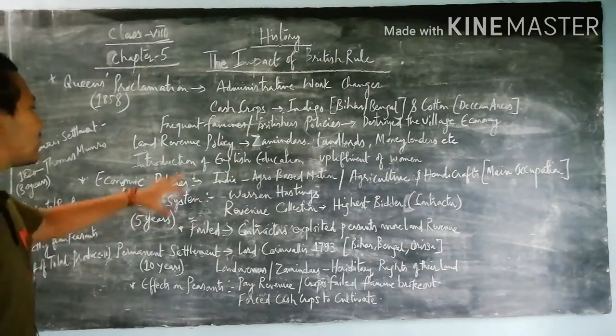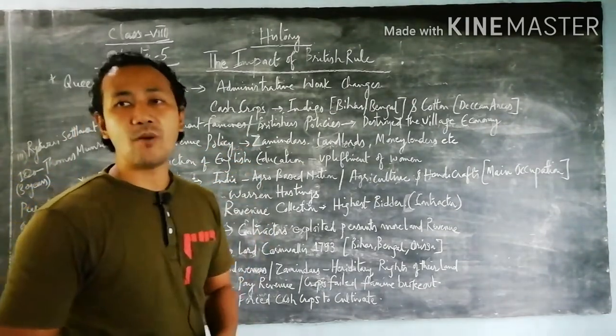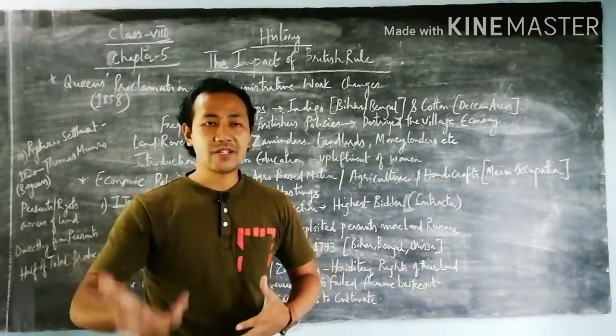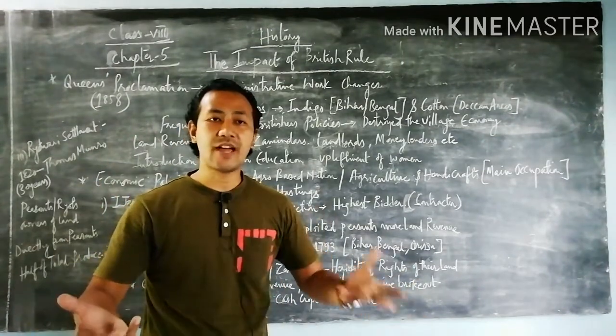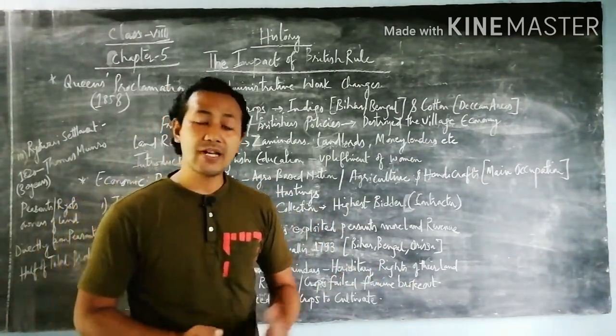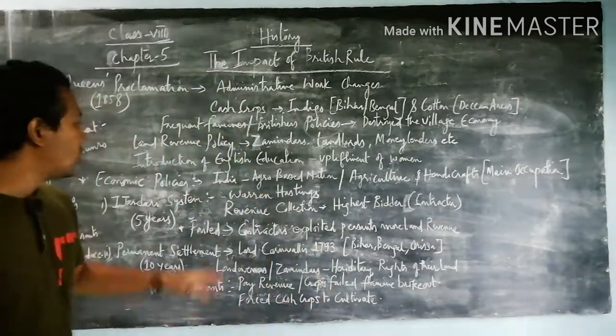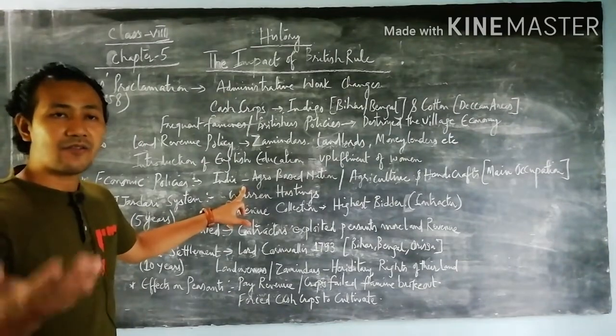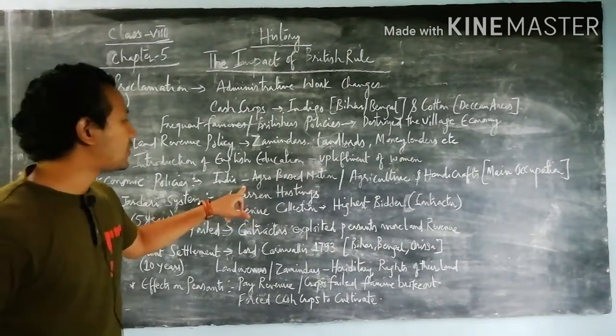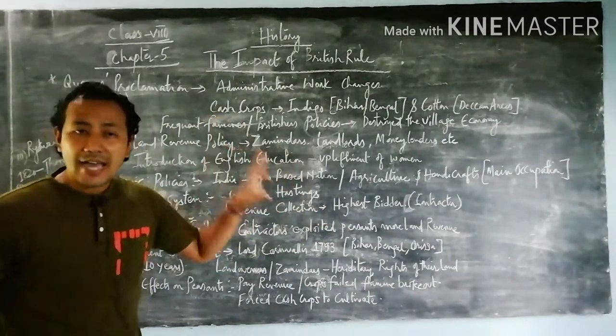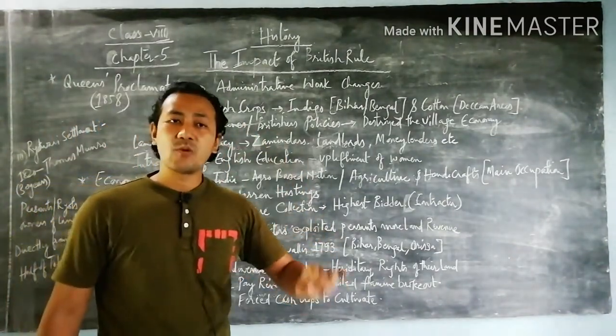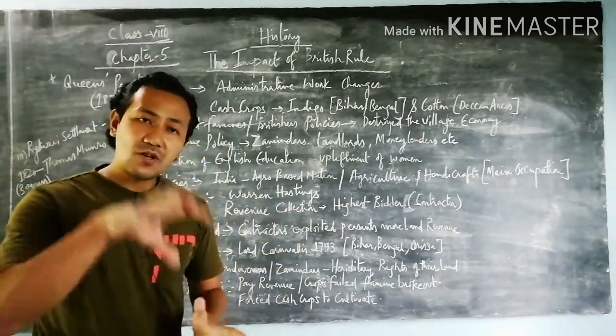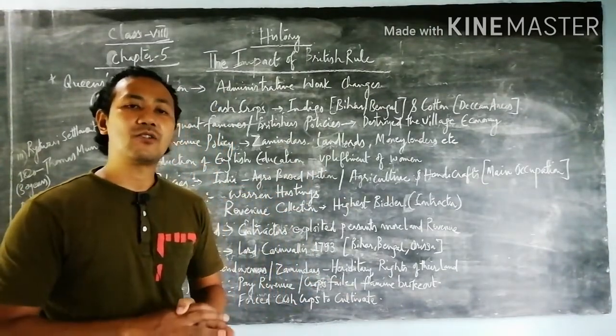Next we talk about economic policies. India from ancient times was an agro-based nation - that means agriculture and handicraft was the main backbone as the main occupation for common people. The British used such policies where people had to face lots of problems and harassment.